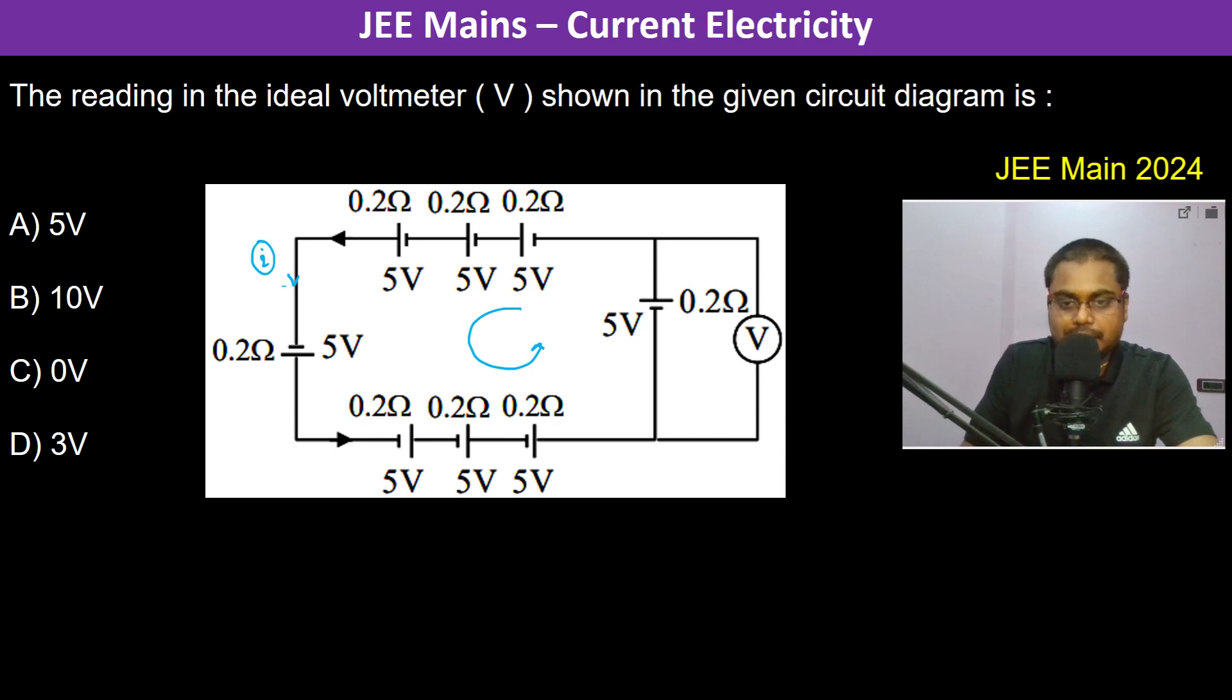One thing here just to mention is that this voltmeter is ideal, so in an ideal voltmeter the current which flows is very negligible, almost equal to zero, because the resistance is very very high.